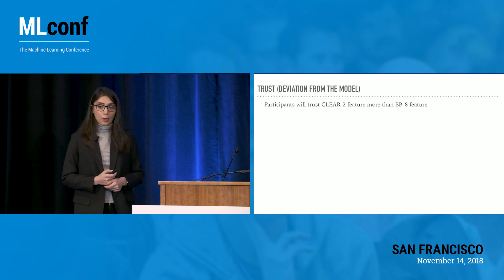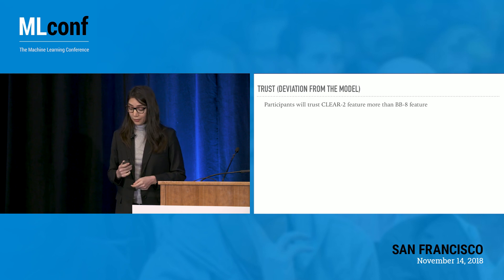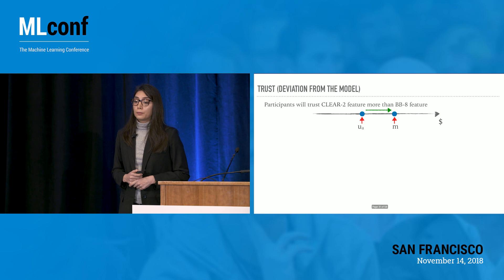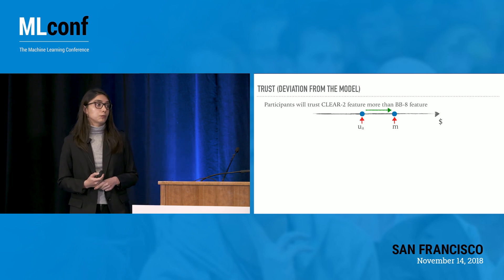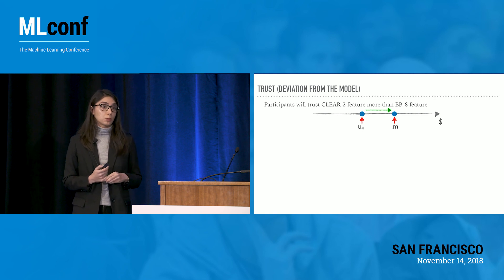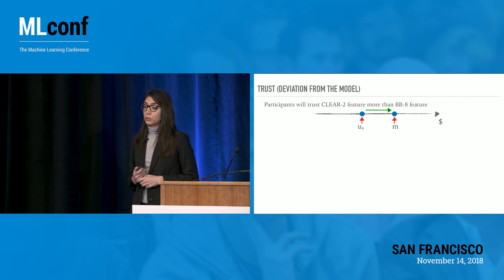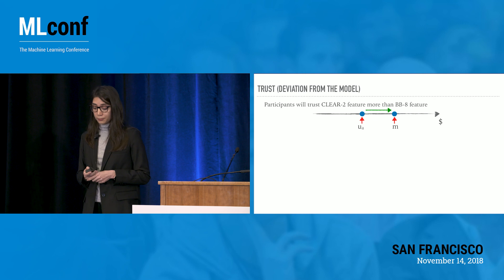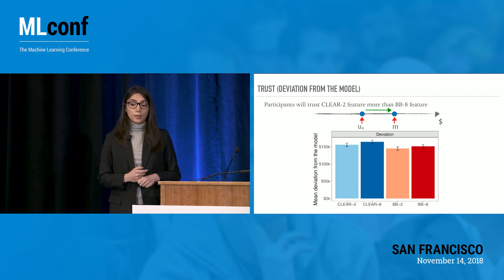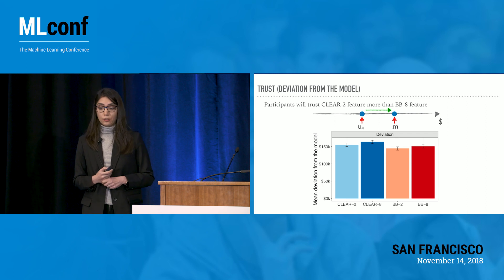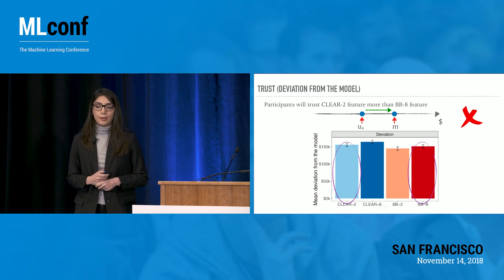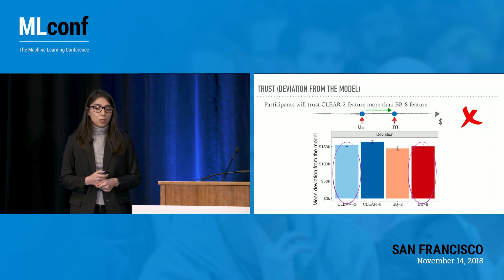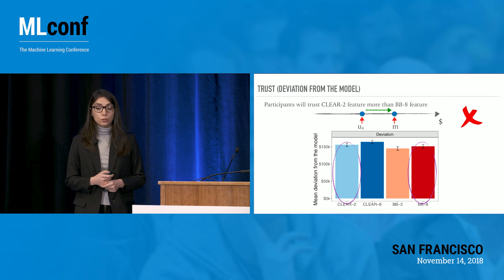Moving on to our second hypothesis about trust: we calculated trust as the absolute deviation of the user's price prediction from the model's prediction. If a user trusts the model, they follow it and deviate less — so lower values indicate higher trust. Contrary to what we hypothesized, people trusted the clear two-feature model equally to the black box eight-feature model; there was no significant difference.